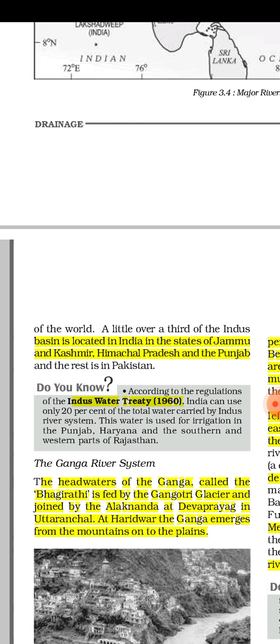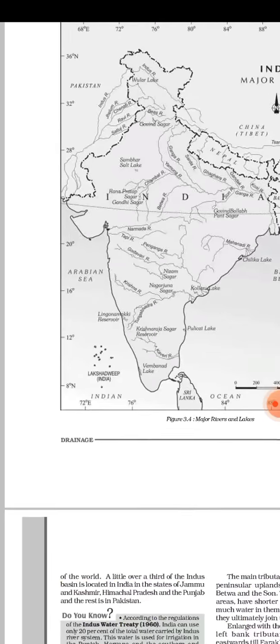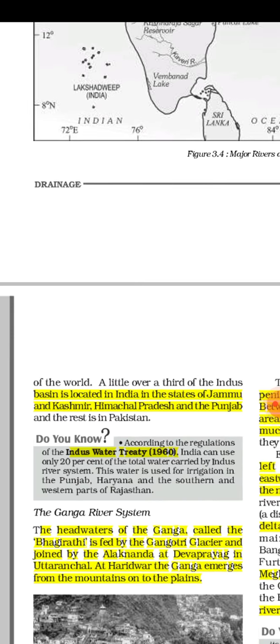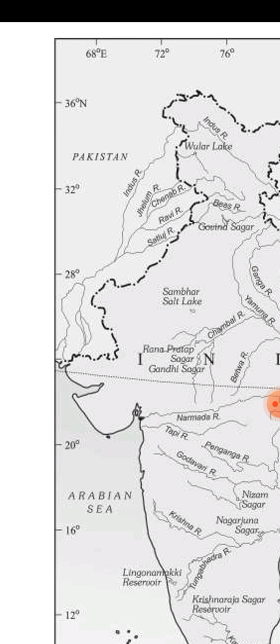A little over one-third of the Indus basin is located in India — that means one-third of the total Indus river system at present belongs to India after partition. It includes the states of Jammu and Kashmir, Himachal Pradesh, and Punjab. The majority of the Indus river system belongs to Pakistan at present.